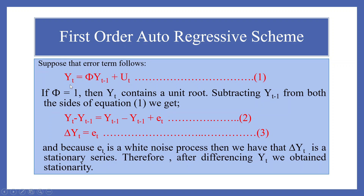Let's understand this concept. Yt is equal to phi times Yt minus 1 plus Ut. If phi is equal to 1, then Yt contains a unit root. Subtracting Yt minus 1 from both sides of the equation, we get delta Yt equals Yt minus 1 minus Yt minus 1 plus Et, which simplifies to delta Yt equals Et. Because Et is a white noise process, delta Yt is a stationary series. Therefore, after differencing Yt, we obtain a stationary series.